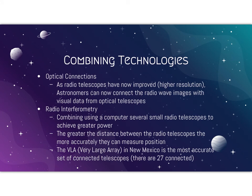Combining technologies: as radio telescopes have improved with higher resolution, astronomers can connect the radio wave images they create with visual data from optical telescopes. There's also radio interferometry, which involves combining several radio telescopes. The greater the distance between the telescopes, the more accurately they can measure position, like triangulation. The Very Large Array is the most accurate set of connected telescopes.